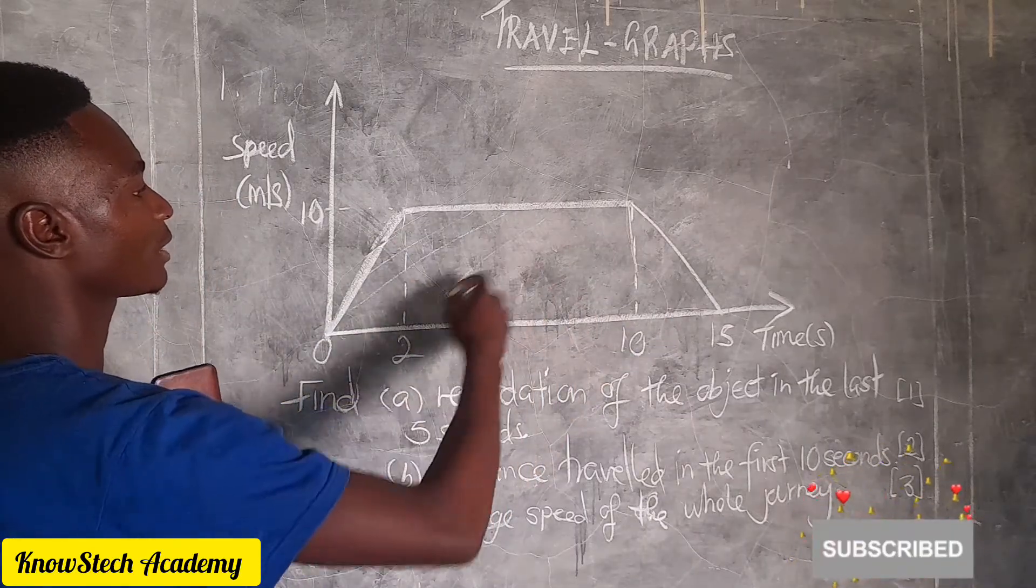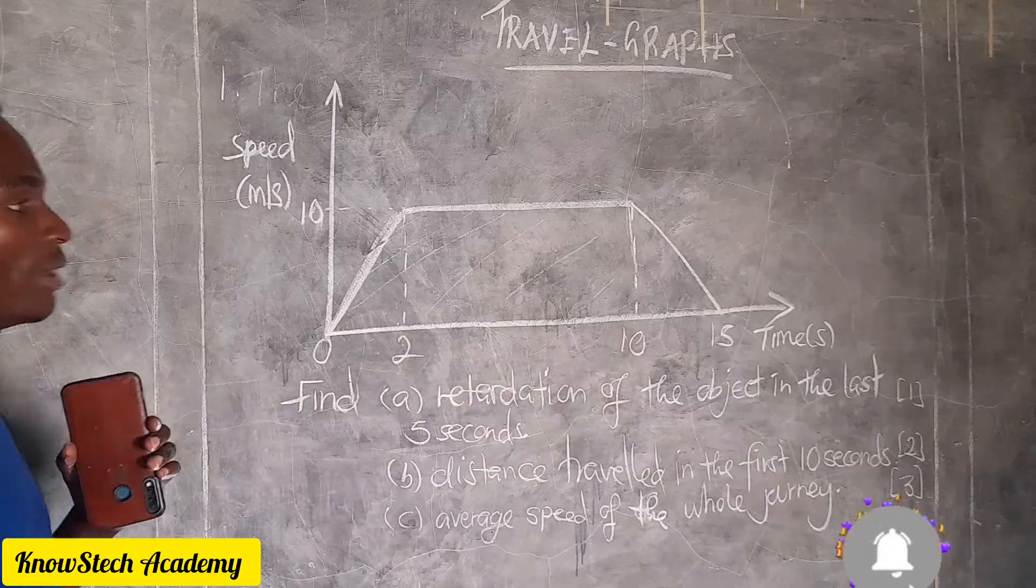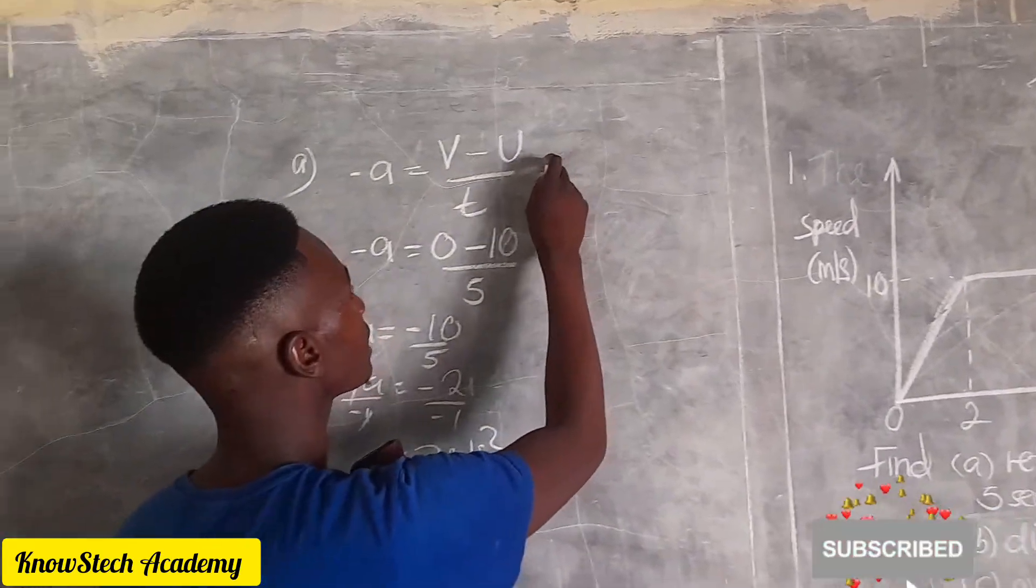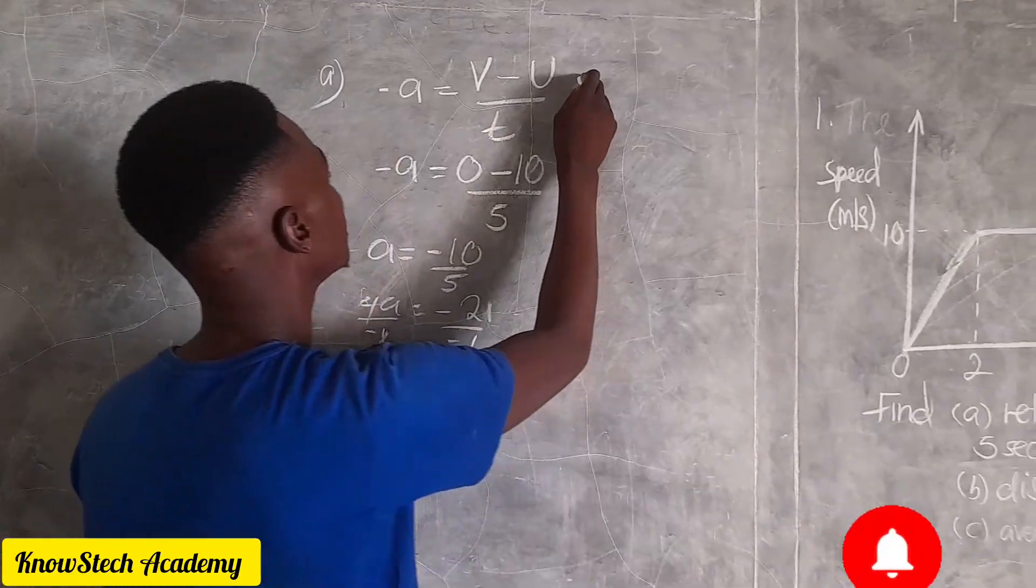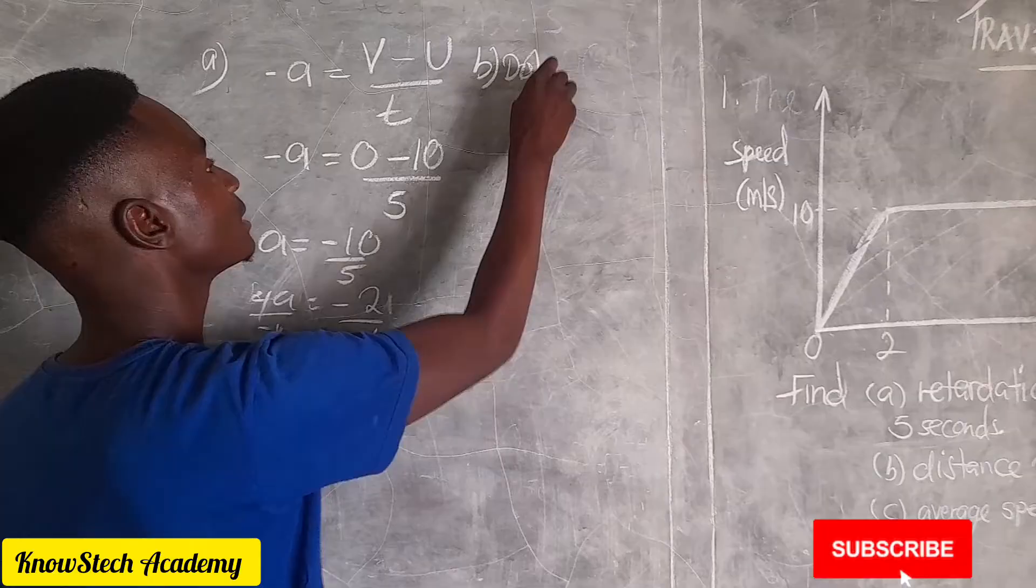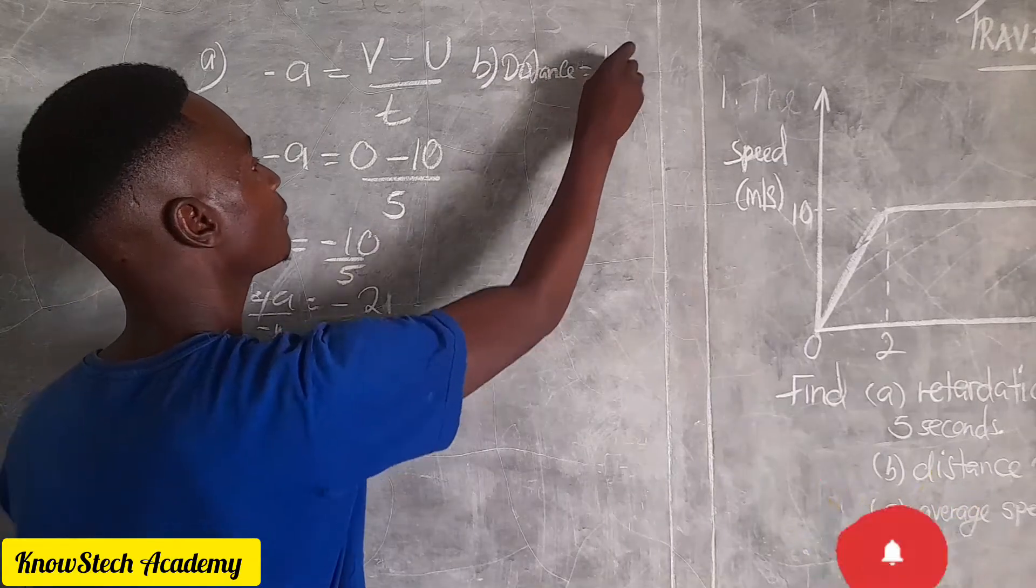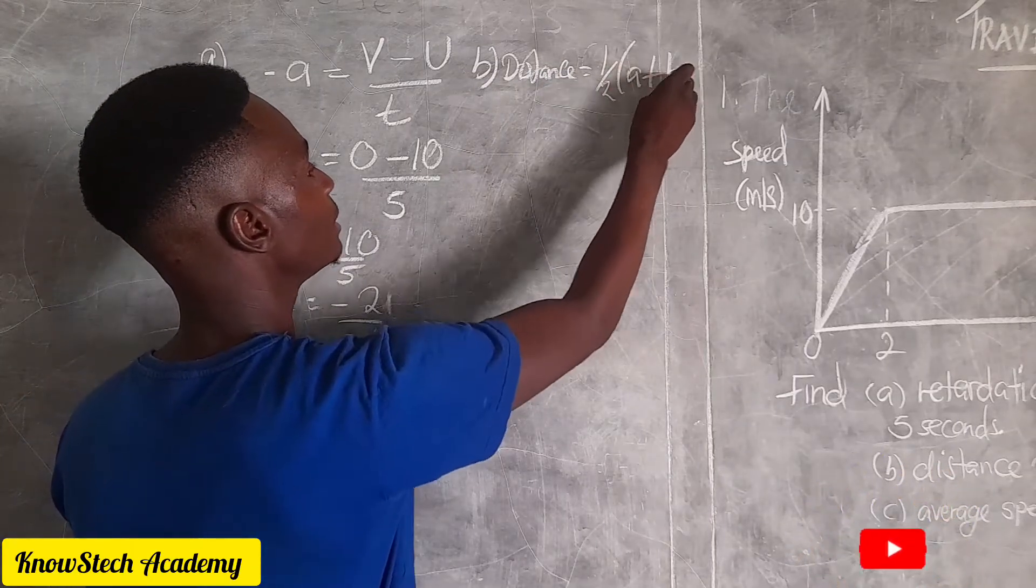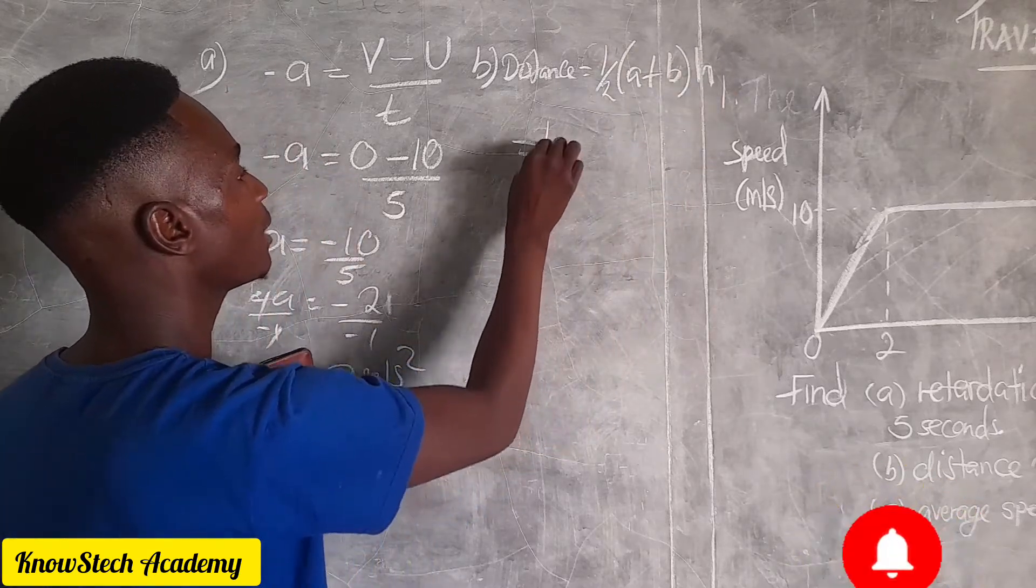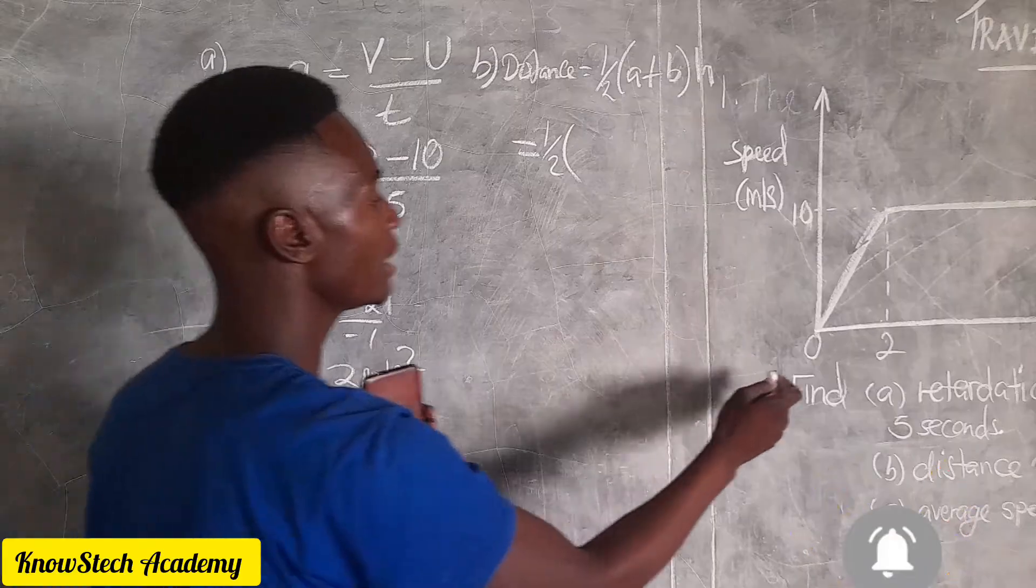In short, we have to calculate this area here. So to find the distance covered, it will be distance equals half times a plus b times h.